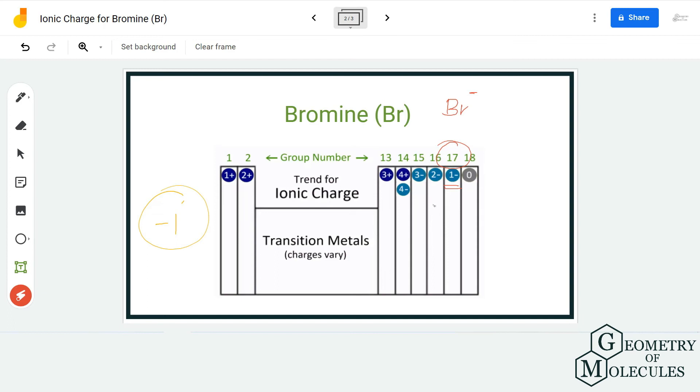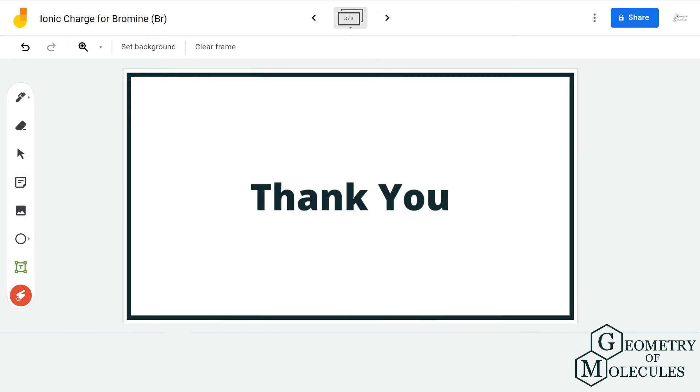Anytime you see bromine atom in a molecule, you can assume that it will have a minus one charge. I hope this video helps you understand the ionic charge for bromine. For more such videos on Lewis structure, molecular geometry, and polarity of molecules, make sure to subscribe to our channel and thanks for watching.